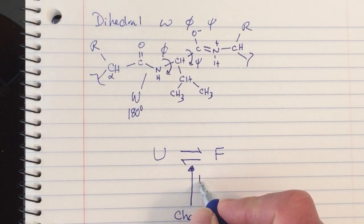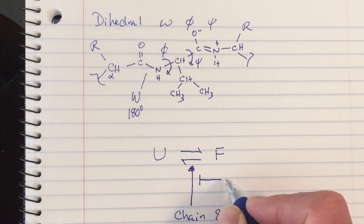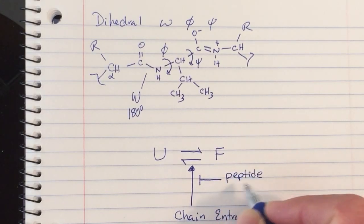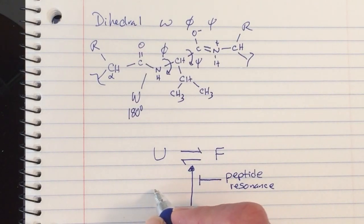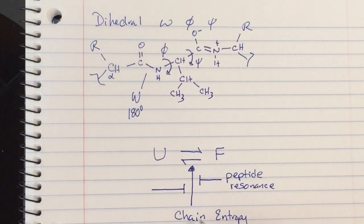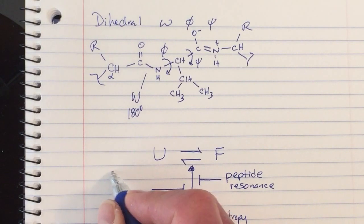The restrictions on Omega imposed by peptide bond resonance severely limit this chain entropy, and therefore make folding more likely to happen.